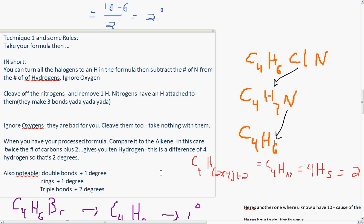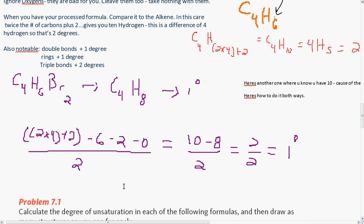Also notable, double bonds are plus 1 degree, rings are plus 1 degree, and triple bonds are plus 2 degrees. When you're practicing your own problems, you'll probably come across that as well.